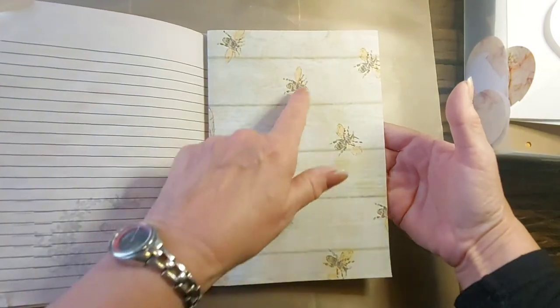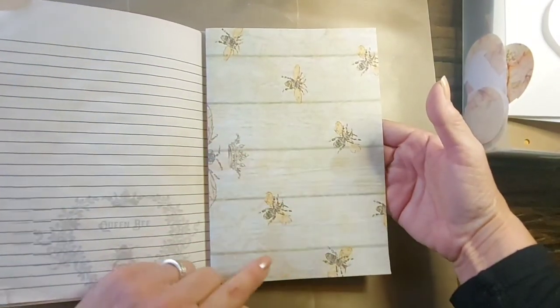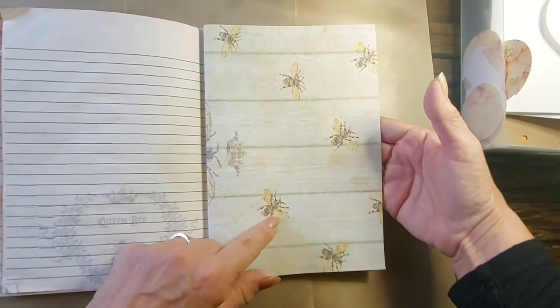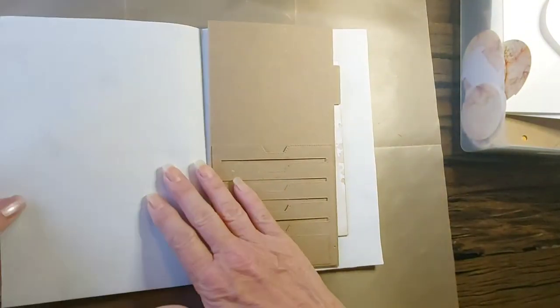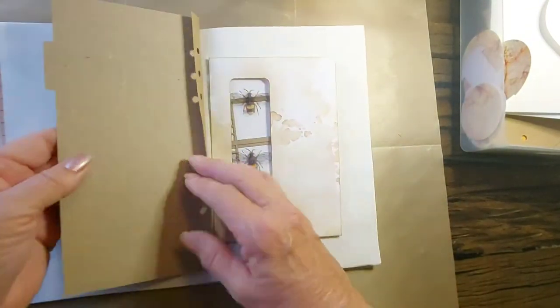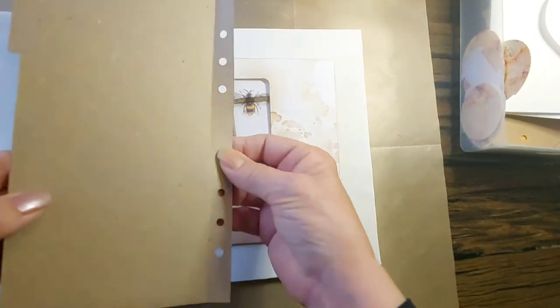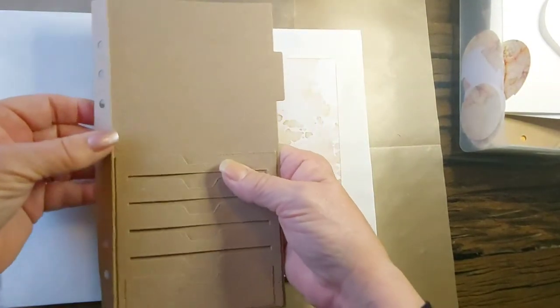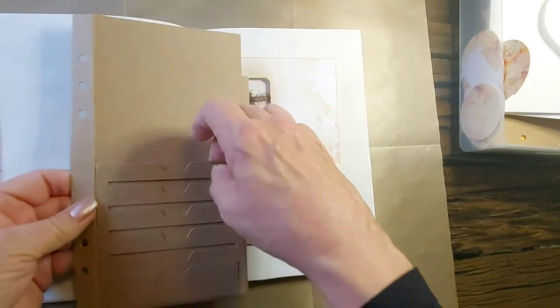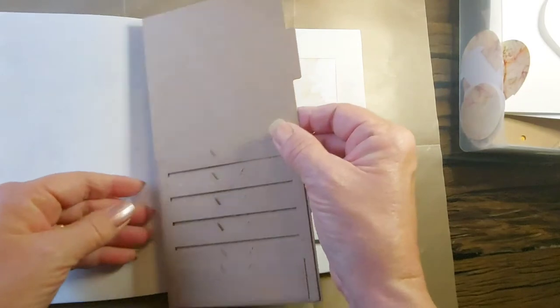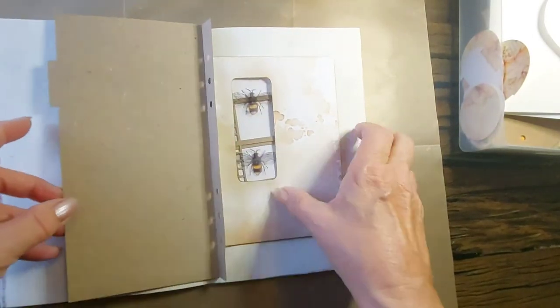Again, another one with the honeycombs and the bees. Again, these are sketches that I've done and then just print it off. Now in the middle, I found a die. I think they're Elizabeth something dies and it's just for a file folder. I've already put the pocket on and that's going in the middle.